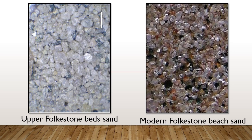To better understand the environment in which the Lower Greensand at Folkestone was deposited, I did some sampling. A sample of the upper Folkestone beds shows sand grains with what seems to be frosting — where sand blown by wind bounces off other grains, creating little pits and a frosting effect. This suggests wind-blown sand during periods when these rocks were being deposited. So as well as evidence of tides, we've got evidence of wind-blown sand, suggesting sea level was sometimes low enough for sand dunes to form. Sand from the modern Folkestone beach, washed by the sea, is shiny by contrast, showing the difference between wind-abraded and water-washed sand.